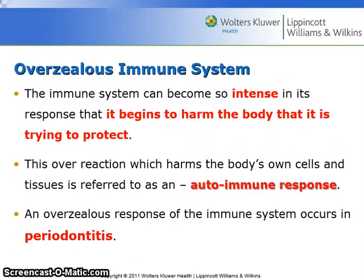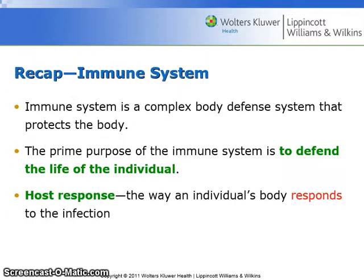An overzealous immune system is also a problem. The immune system can become so intense in its response that it begins to harm the body that it is trying to protect. This overreaction, which harms the body's own cells and tissues, is referred to as an autoimmune response. An overzealous response of the immune system occurs in periodontitis, which puts periodontitis in the category of an autoimmune disease. The immune system is a complex defense system that protects the body and defends the life of the individual. The host response is the way that an individual's body responds to the infection.